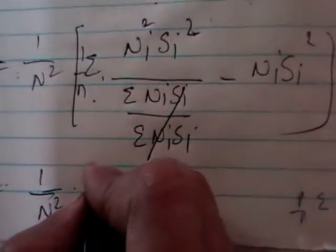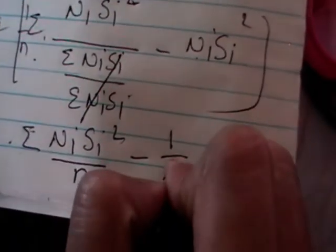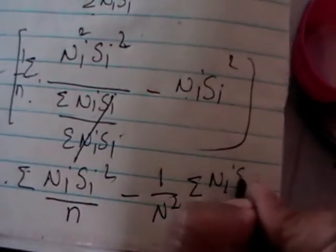These two terms — Sigma NiSi by Sigma NiSi — are the same, so they simplify. We get 1 by N-square times Sigma NiSi-square divided by N, minus 1 by N-square times Sigma NiSi-square. Since 1 by N is independent of i, taking N out of the summation gives us a 1/N factor here, and we can consolidate the expression further.